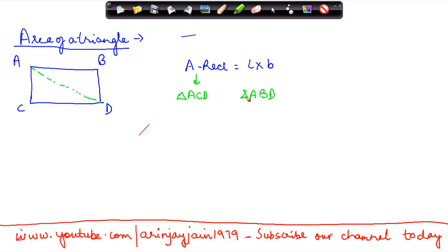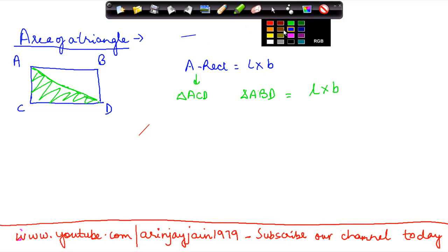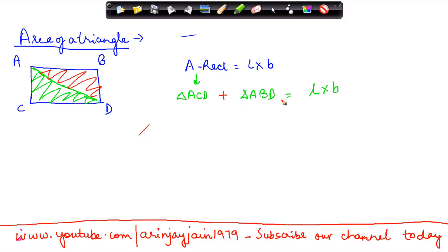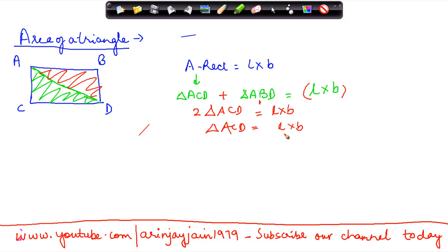We know that the sum of these two triangles is equal to length into breadth. Now if we have divided these two in a manner that the area covered by triangle ACD is equal to the area covered by triangle ABD, then the sum of these two is going to be equal to length into breadth, or rather two times triangle ACD. So triangle ACD is equal to length into breadth divided by two.